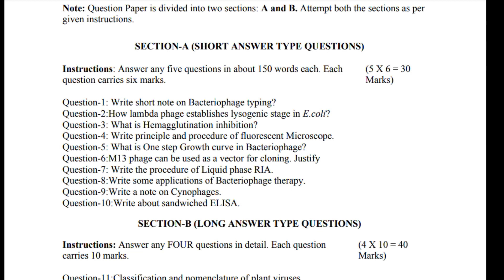Let's see the questions. Question 1: Write short note on bacteriophage typing. Question 2: How does lambda phage establish lysogenic stage in E. coli? Question 3: What is hemagglutination inhibition? Question 4: Write principle and procedure of fluorescent microscope. Question 5: What is one step growth curve in bacteriophage?